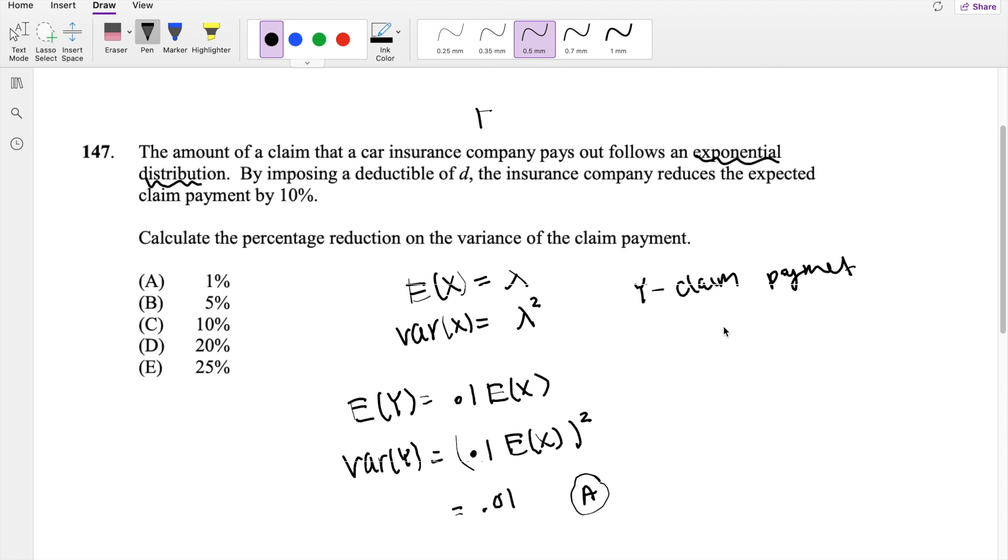I hope that kind of makes sense intuitively too, because if they just tell you the expected payment of exponential function reduced by 10%, the change for a variance is just going to be 10% squared. So that's going to be 0.01, which is your answer A.